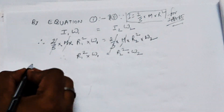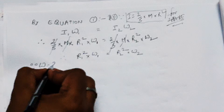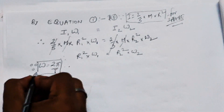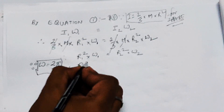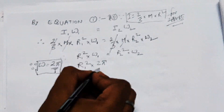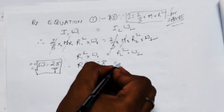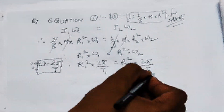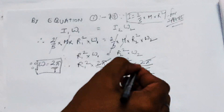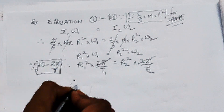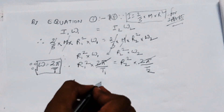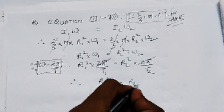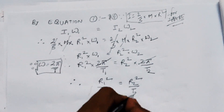We get R1²·omega1 = R2²·omega2. Since omega = 2π/T, we use this formula to replace omega1 and omega2 in the equation. After cancelling 2π from both LHS and RHS, we get the relation between R2, R1, T1, and T2 as shown.